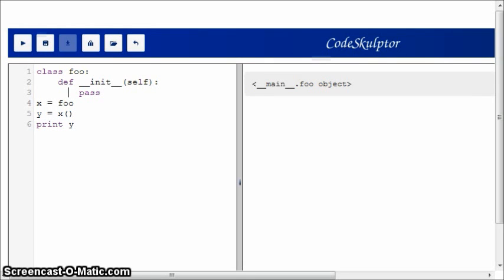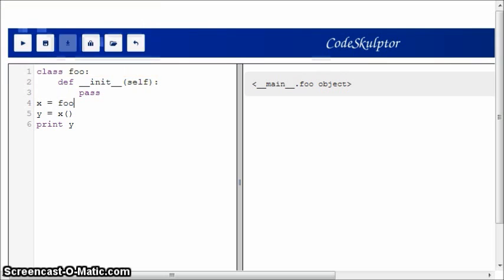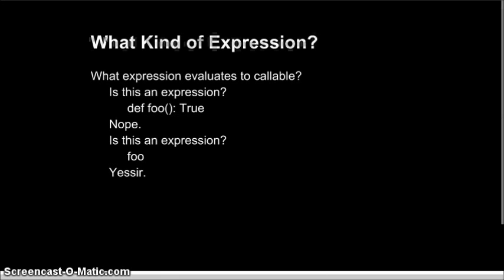So what did we do here? We defined class foo, and then we assigned the value stored in foo into x, and then we called x and we assigned the result to y. That result, as we can see here, is a foo object. So class names are variables that store callables just like function names.